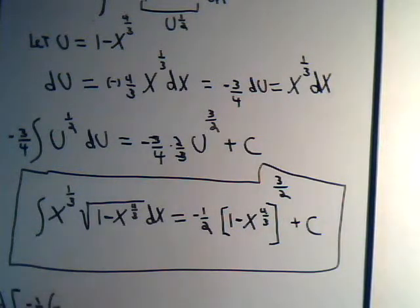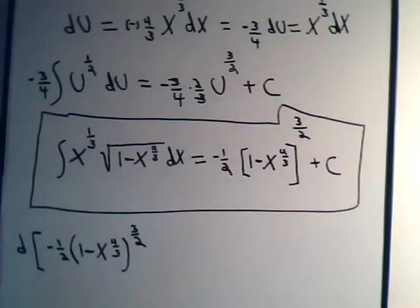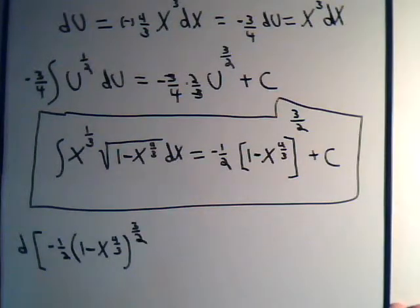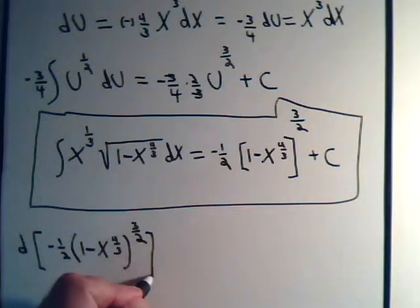We're taking the differential of minus 1/2, 1 minus x, and x is to the 4/3 power. And the whole thing is raised to the 3/2 power. The differential of constant, of course, is 0.